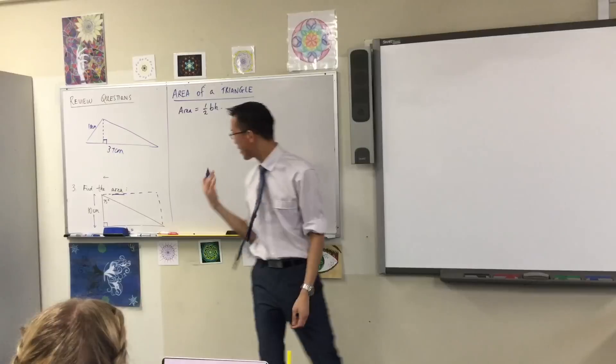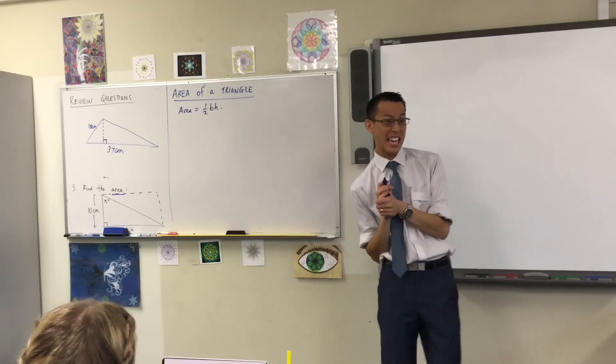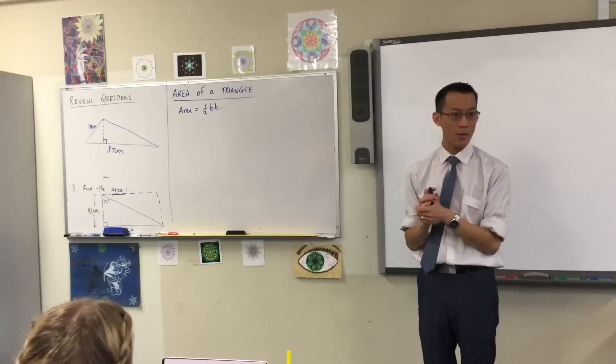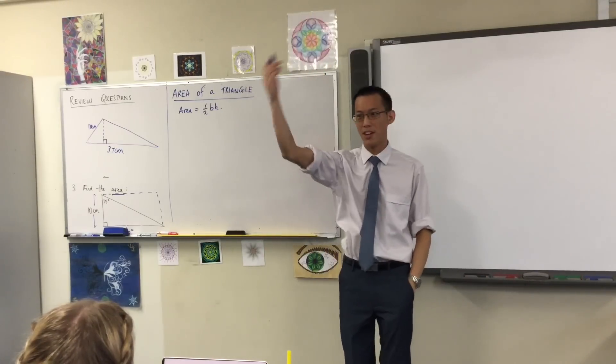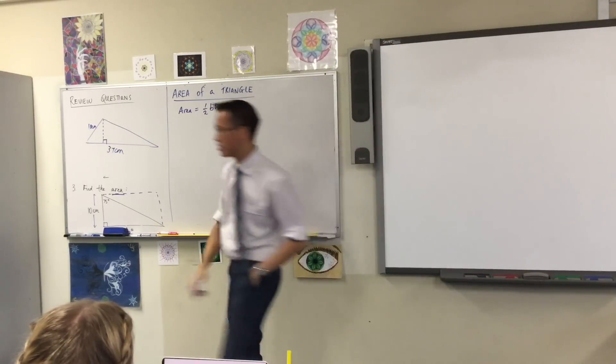Does anyone know, by the way, that dotted line has a special name. It starts with an A. We usually use the same word when we're talking about how high something is in the air, like a mountain, or a plane, an altitude. Thank you.